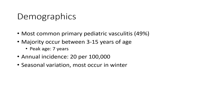HSP is the most common primary pediatric vasculitis, representing around 49% of cases. The majority occur between 3 to 15 years of age, with a peak age of 7 years. Annual incidence is 20 per 100,000, with a seasonal rise — most cases occur in winter.